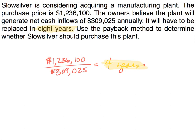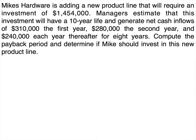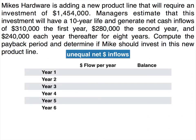What do we do when the net annual cash inflows are not equal? Here we have Mike's Hardware, adding a new product line that will require an investment of $1,454,000. Managers estimate this investment will have a 10-year life and generate net cash inflows of $310,000 the first year, $280,000 the second year, and $240,000 each year thereafter for 8 years. We need to compute the payback period using a spreadsheet since the payments are unequal.